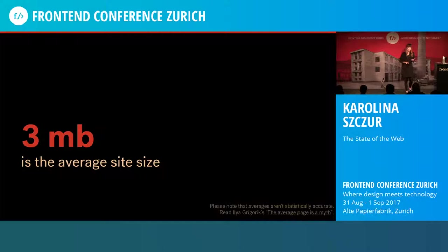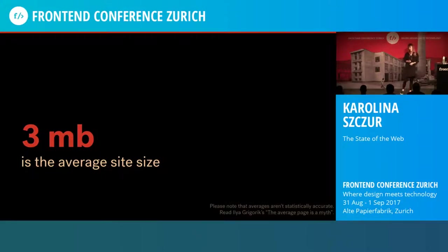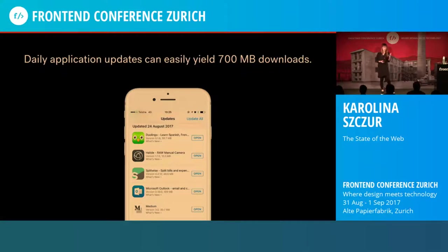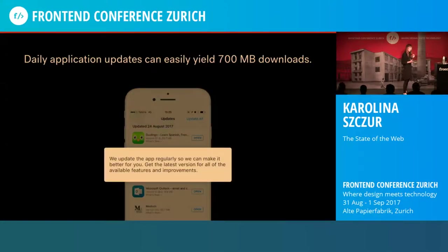Our websites and products aren't better either. The average site size right now is 3 megabytes, which is the original size of the Doom game — that's just mind-blowing. While averages can hide some data, if we look at medians, the median size is still 1.4 megabytes. Images can easily be 1.7 megabytes in bandwidth; JavaScript, 400 kilobytes. And this isn't a problem specific to the web platform — it's happening in native applications too. When was the last time you downloaded 700 megabytes of app updates in the App Store in one day, or 200 megabytes of unspecified bug fixes?